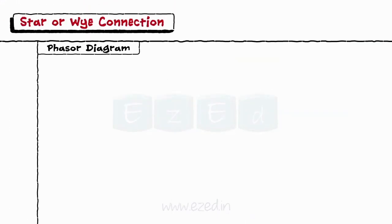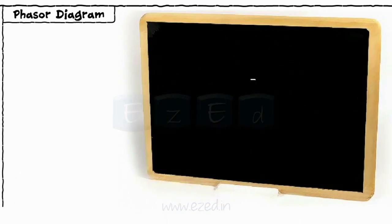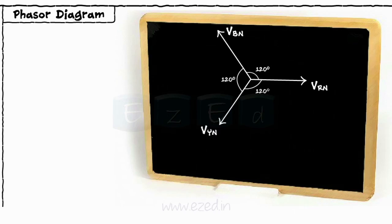Let's draw the phasor diagram for this system. Taking Vrn as a reference, the two phases Vyn and Vbn are drawn 120 degrees apart from each other. Being the inductive circuit, the current lags the voltage by an angle phi.